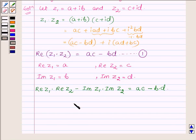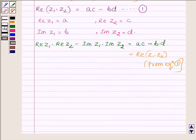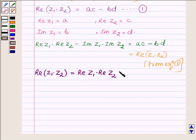This equals AC minus BD, which is equal to the real part of Z1 times Z2. Therefore, the real part of Z1 times Z2 equals the real part of Z1 times the real part of Z2, minus the imaginary part of Z1 times the imaginary part of Z2.